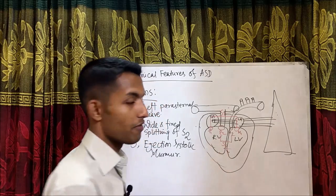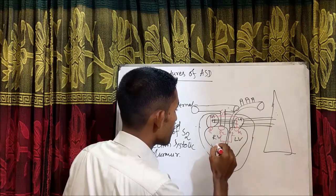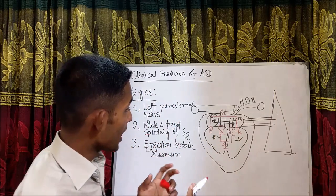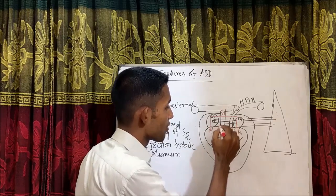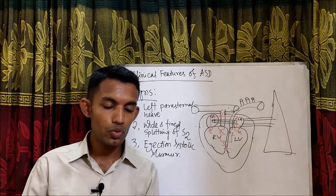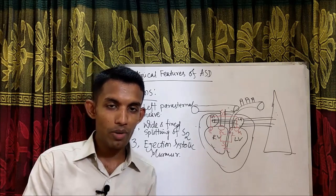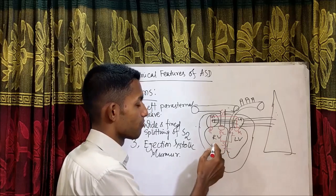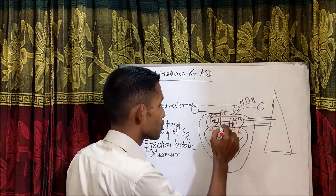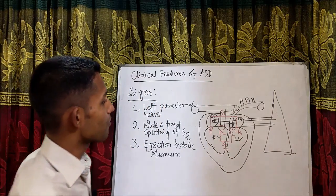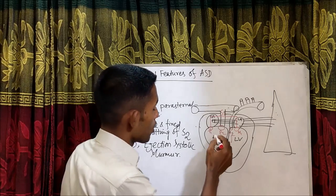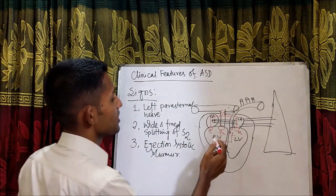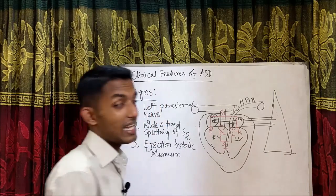Now why is there an ejection systolic murmur in ASD? In ASD, as there is right ventricular overload, there is extra volume in the right ventricle. This extra volume needs to be ejected through the pulmonary valve. When this extra amount of blood is being ejected through the pulmonary valve, there is turbulence. A murmur is due to normal blood flow through an abnormal valve, or abnormal blood flow through a normal valve. Here the pulmonary valve is normal but there is an abnormal amount of blood — so turbulence creates the murmur. Since ejection occurs during systole, this is called an ejection systolic murmur in ASD.